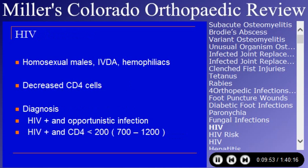HIV — you are going to get questioned on this somehow. It is not only common but politically favored, and you are going to get questions on HIV. It occurs in homosexual males, particularly IV drug abusers, and with high incidence in hemophiliacs, associated with a diminished number of CD4 or helper T cells. Diagnosis of AIDS requires HIV positive status with an opportunistic infection, or HIV positive with a CD4 count of less than 200.